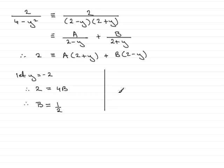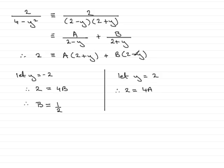Next, to find constant A, I make the bracket (2 minus y) equal to zero by setting y equal to 2. On the left we have 2 equals 2 plus 2, which is 4, so 2 equals 4A. The second bracket goes to zero. Dividing both sides by 4 gives A equals 2 quarters, or one half.